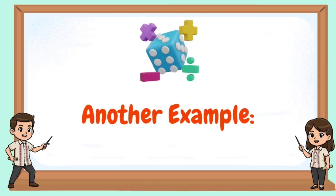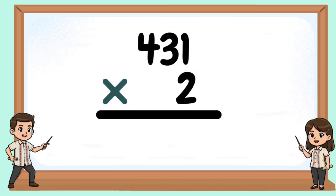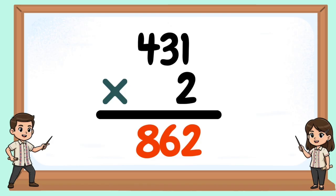Another example: 431 times 2. 2 times 1 equals 2. 2 times 3 equals 6. 2 times 4 equals 8. 862 is our product.